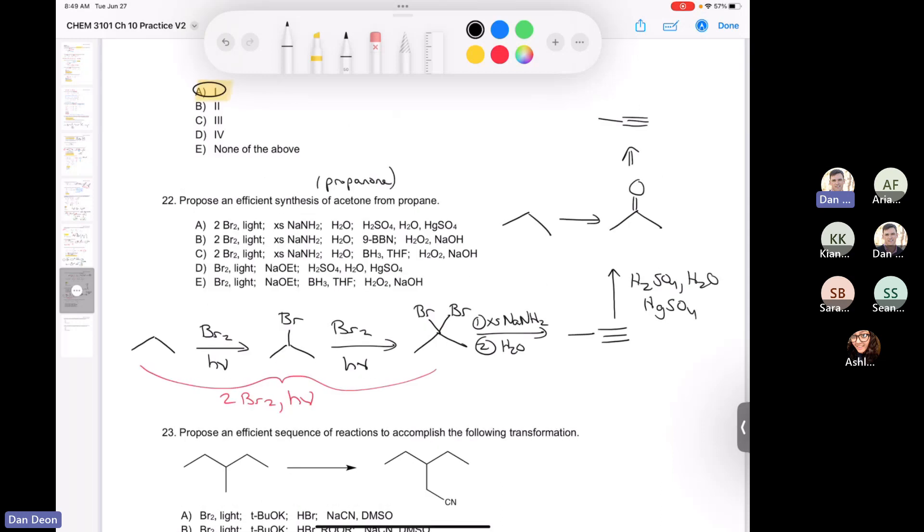And that will give you the enol. So I'm just going to erase some of this here just so I have some more room to work. So that's going to produce the enol by a Markovnikov addition, and the enol is going to undergo tautomerization.